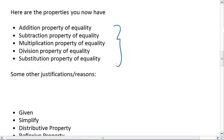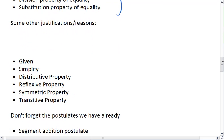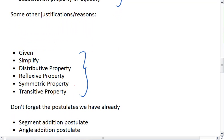You already have these 5 properties of equality: addition, subtraction, multiplication, division, substitution. Here are some other justifications or reasons that you should add to your list. A given. A given is a statement that the problem has already set us up with, that they gave to us.